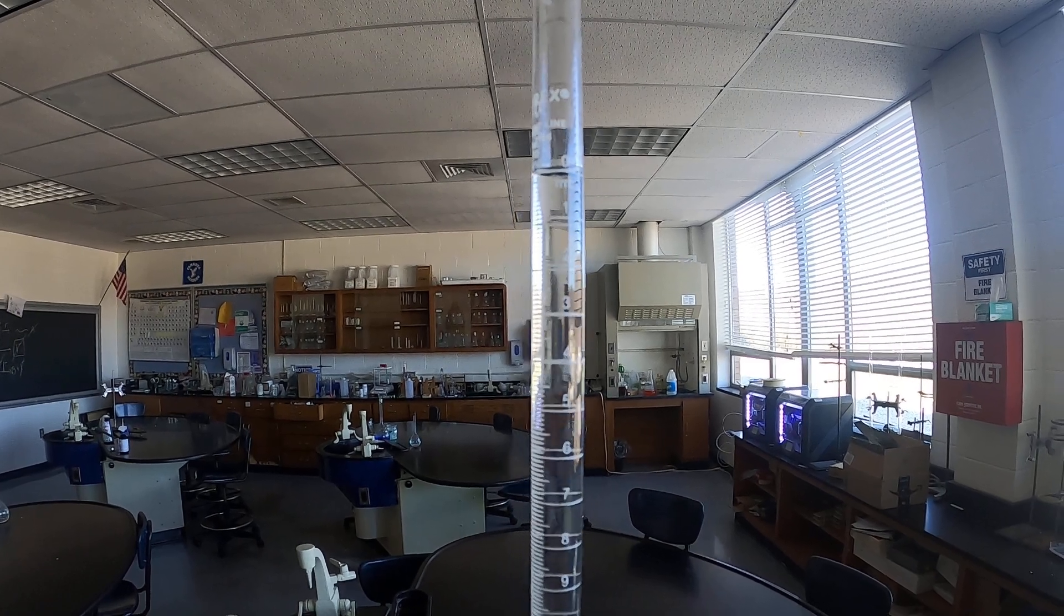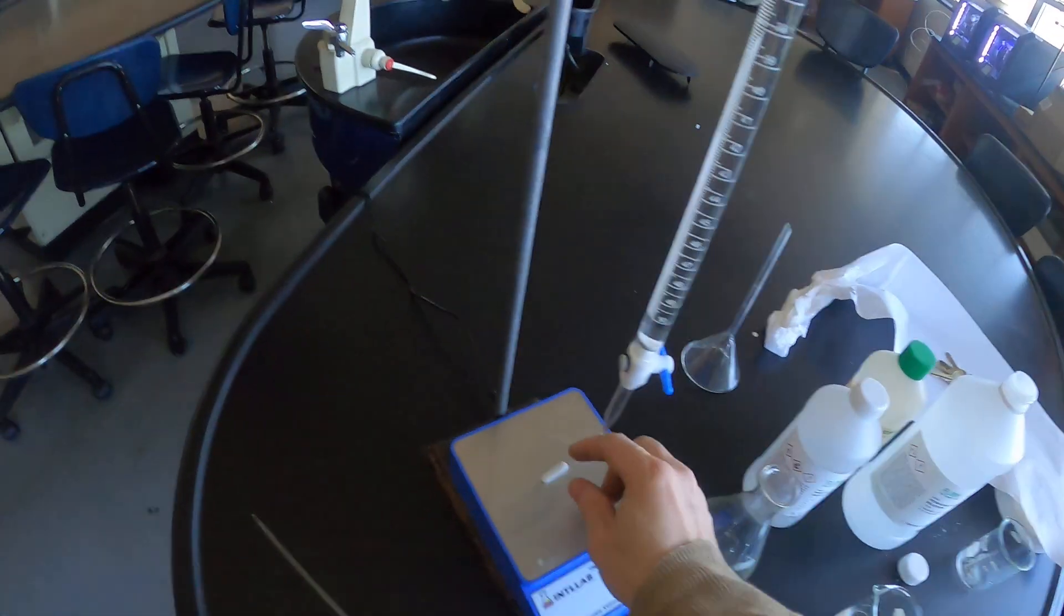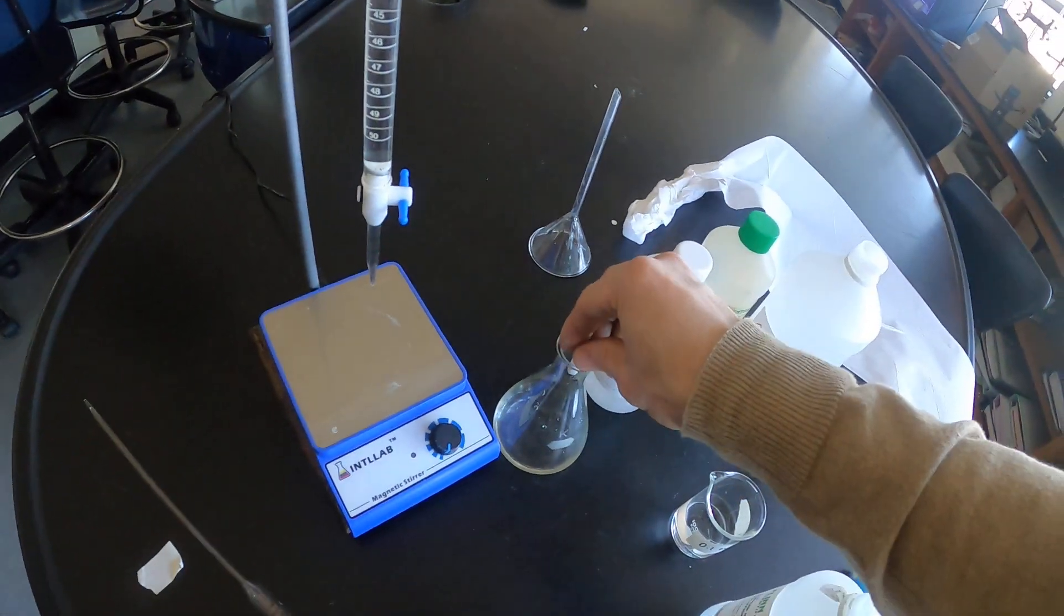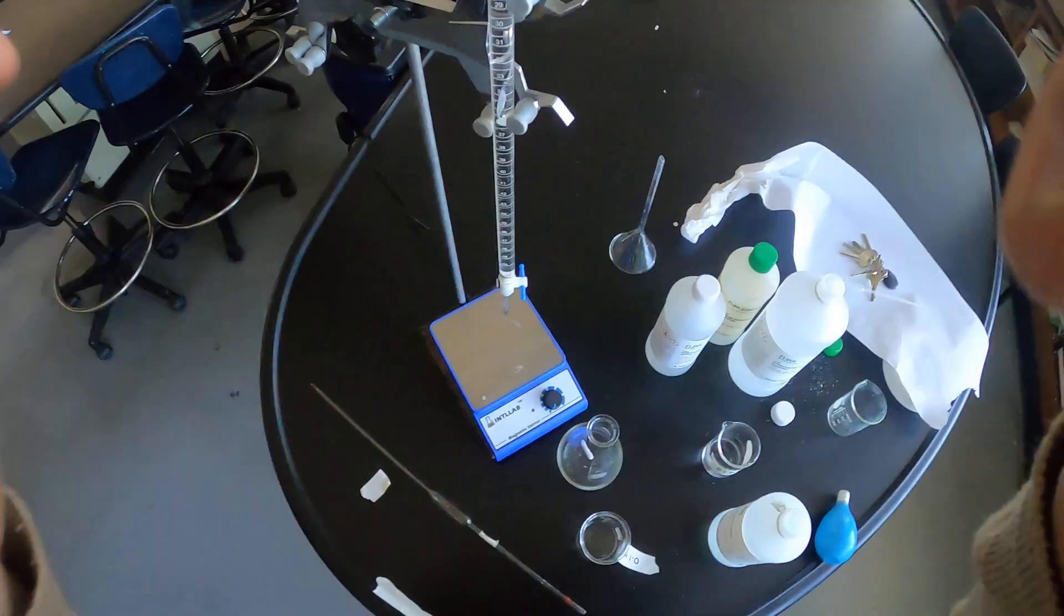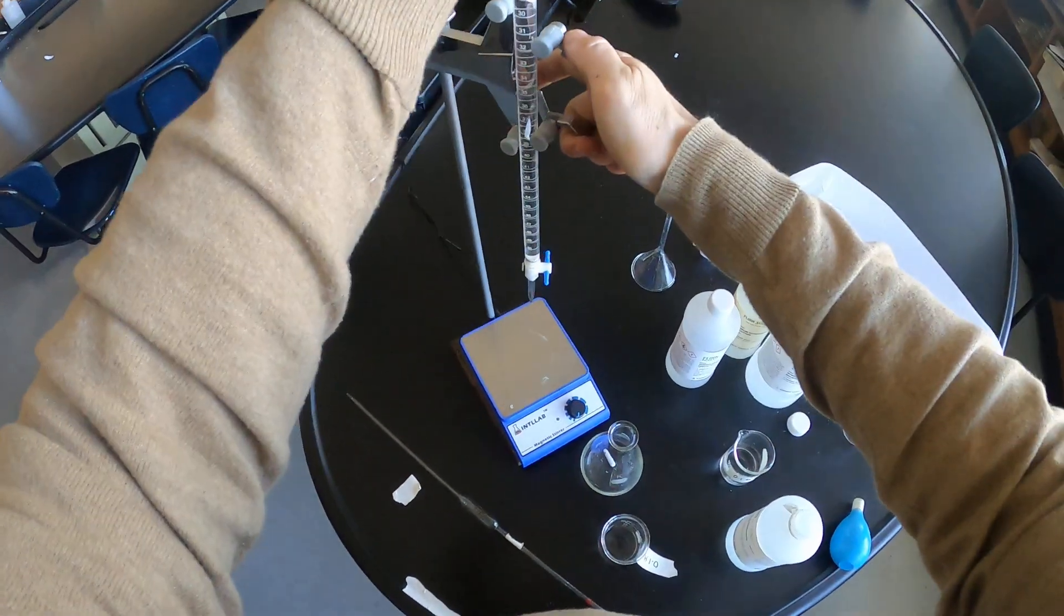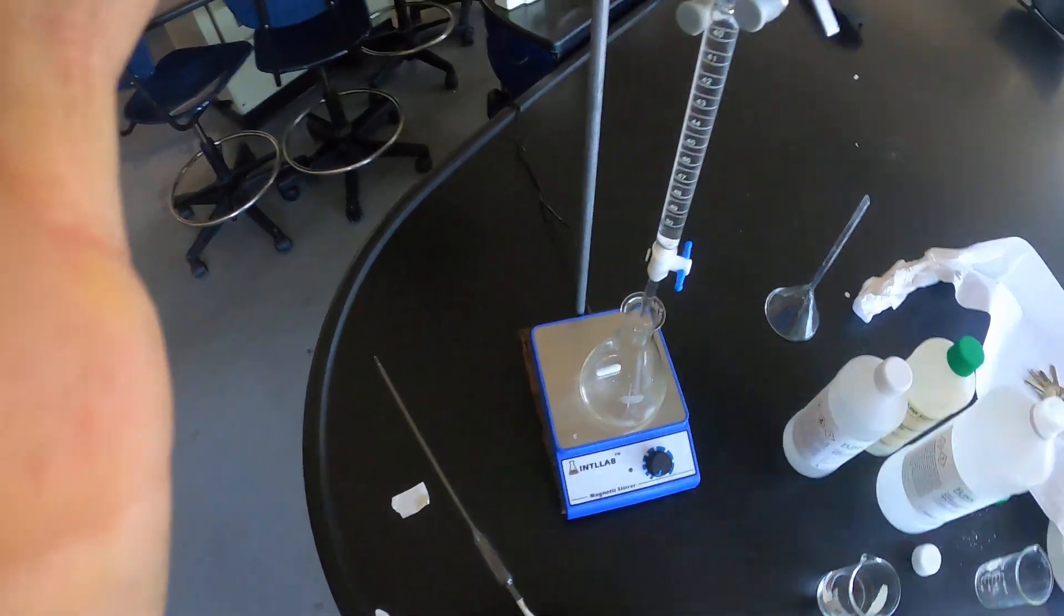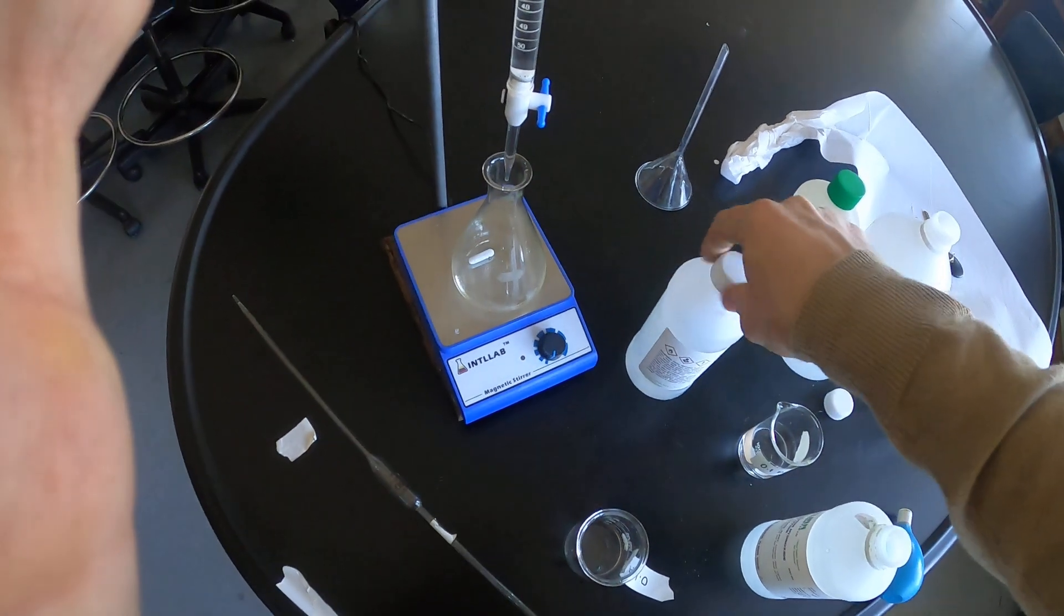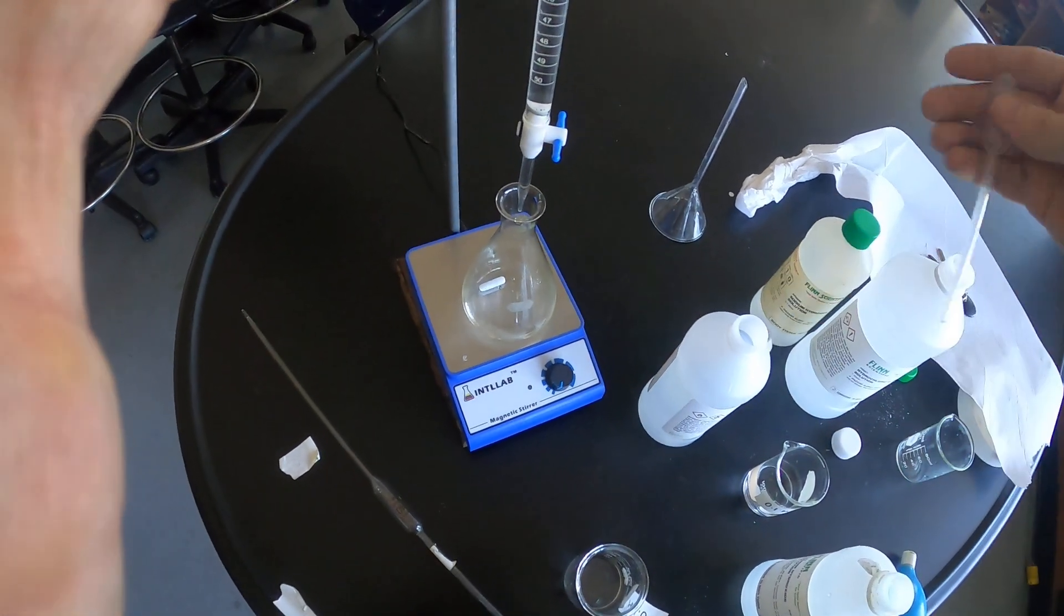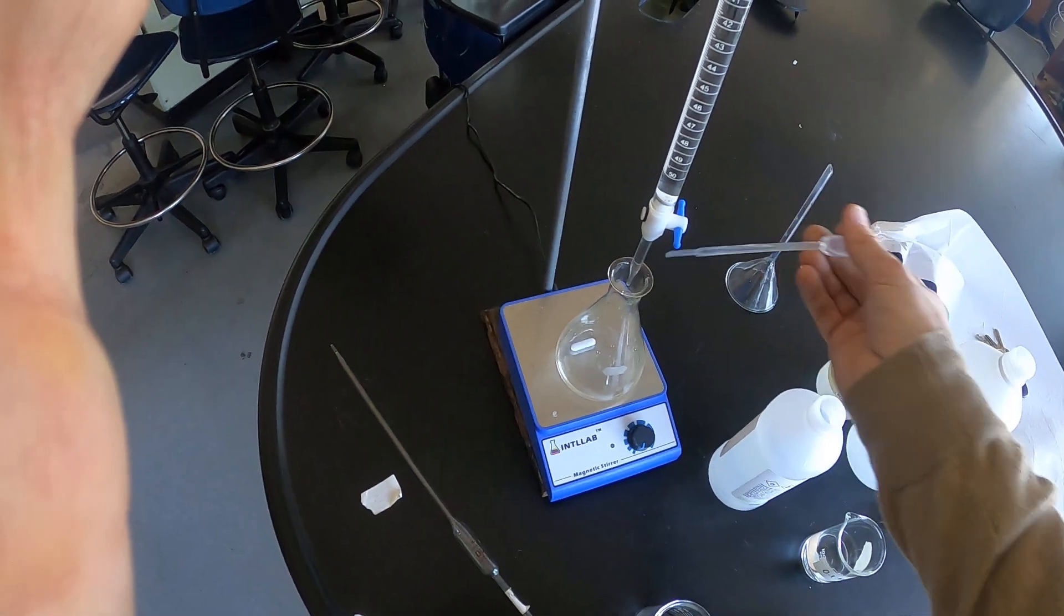Into the flask goes my stir bar and a few drops of indicator. Pour some indicator out into your beaker, so do as I say not as I do for this one.